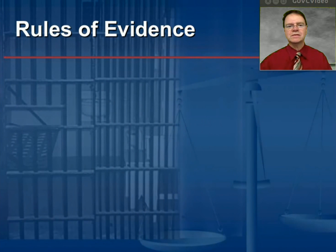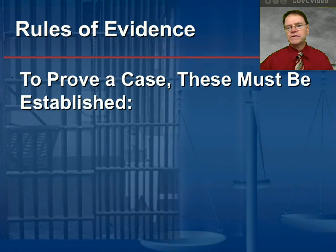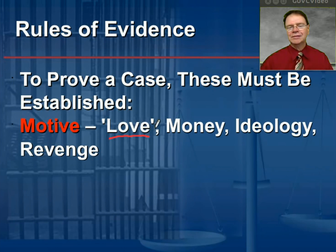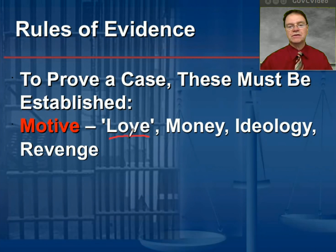First, the rules of evidence. Keep in mind, in order to prove something in court there are several things that need to be established in order to establish guilt in the courtroom. First, the motive—why a person would commit a crime. We use the word love here kind of tongue-in-cheek. Really, love is only going to do good to another person, but people may feel a sense of love for one person and out of that love be tempted to do something bad to somebody else.